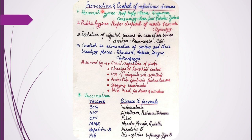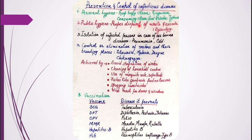For general prevention and control of infectious diseases, the first method is personal hygiene — keeping yourself clean and consuming good food and water can prevent a number of diseases. The second is community hygiene, which includes proper disposal of waste and fecal material, since food can get contaminated through fecal material.